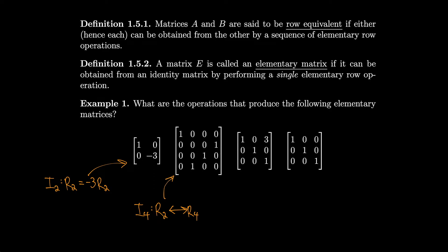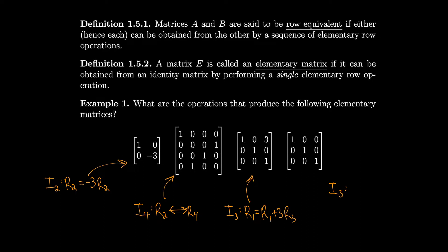As for the third elementary matrix, there's an extra 3, which came from adding 3 times the last row to another row. So this is the 3-by-3 identity matrix where row 1 was replaced with row 1 plus 3 times row 3. Last but not least, the fourth matrix is just the 3-by-3 identity matrix — we can say any row equals 1 times itself. The identity matrix is trivially an elementary matrix.